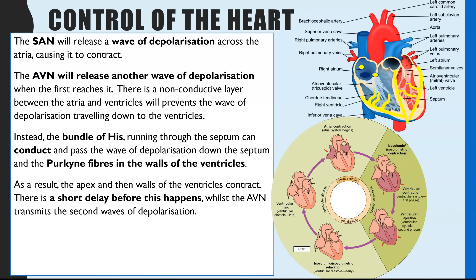As a result, it's the apex of the ventricles which contracts first — apex meaning the tip — because the wave has to travel down the bundle of His. The apex and outer walls contract first, then the Purkinje fibres cause the rest of the walls to contract. This is like squeezing toothpaste from the bottom upwards to get maximum output — squeezing at the bottom and moving the contraction upwards forces out the maximum amount of blood.